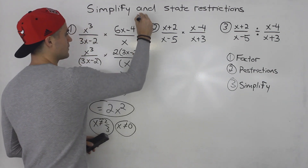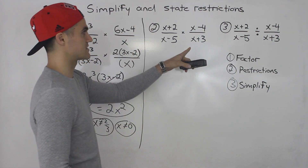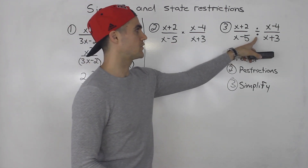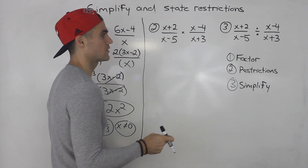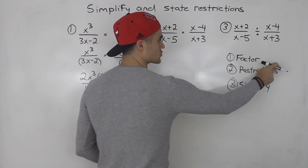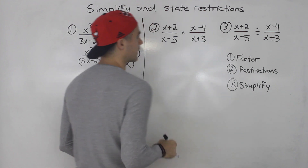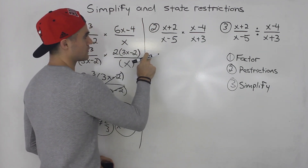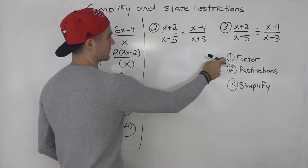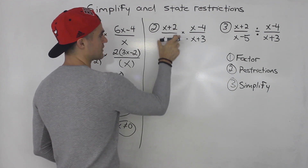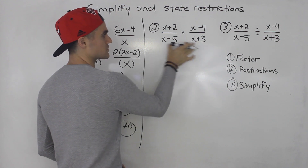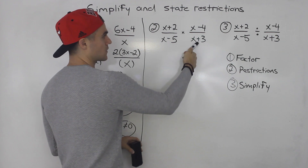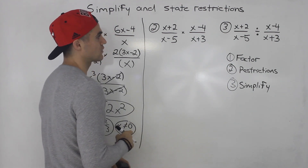Moving on to number 2. Notice how number 2 and number 3 are the same expressions, except in number 2 we are multiplying and in number 3 we are dividing. I did that to show how the restriction step is different for multiplying versus dividing. Starting with number 2, everything is already factored in both rational expressions — x plus 2, x minus 5, x minus 4, and x plus 3 can't factor any further.